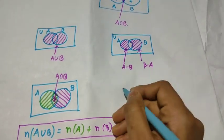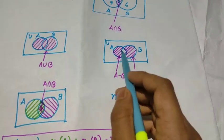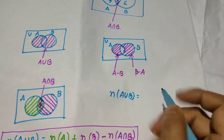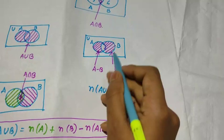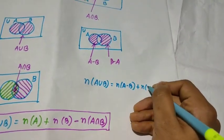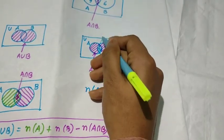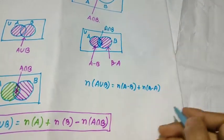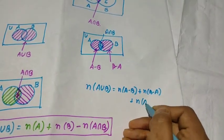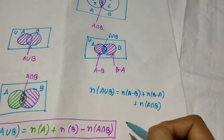Similarly, from this figure we can find N(A∪B) another way: you can see that this region is N(A minus B), adding this region N(B minus A), and what is left is the portion A intersection B, so we add N(A∩B). In this way we can also find N(A∪B). Now for three sets A, B, C: